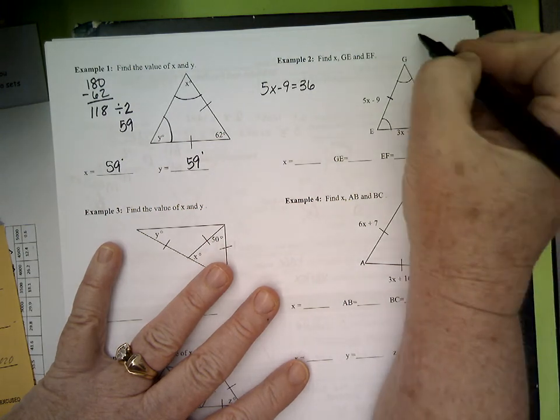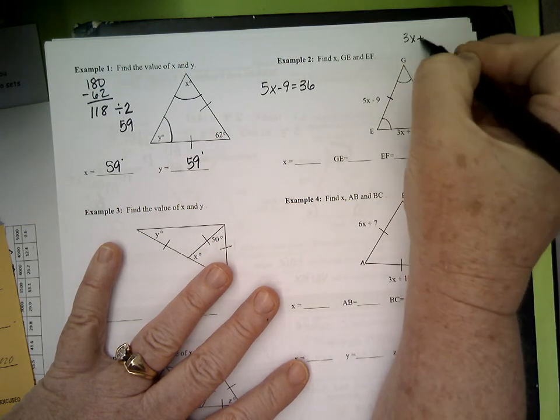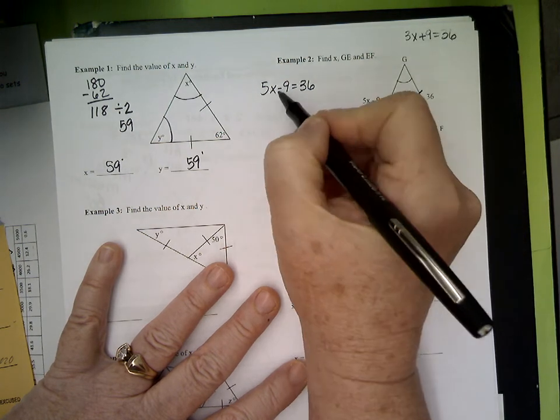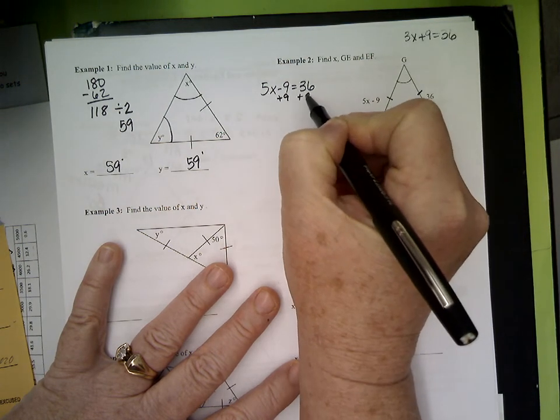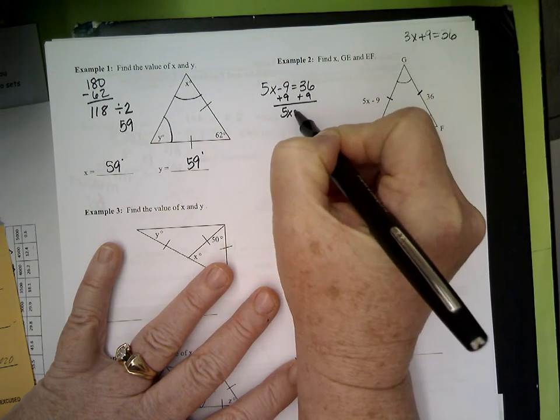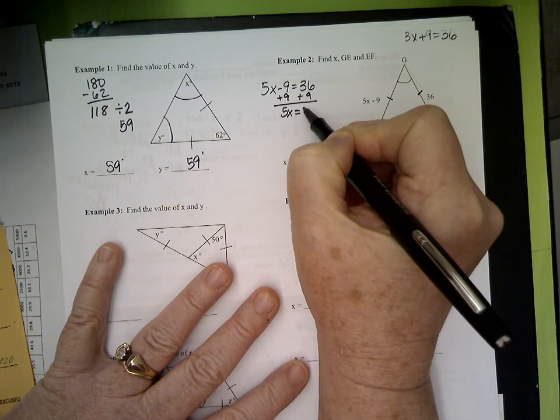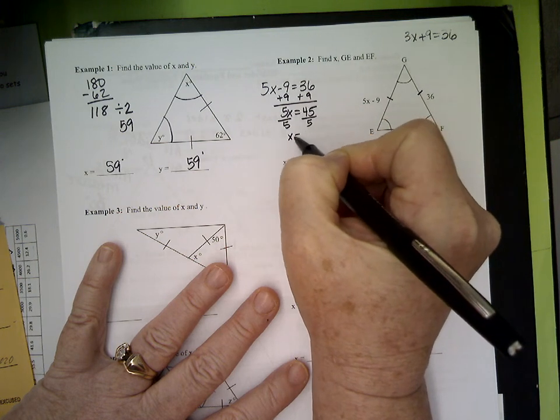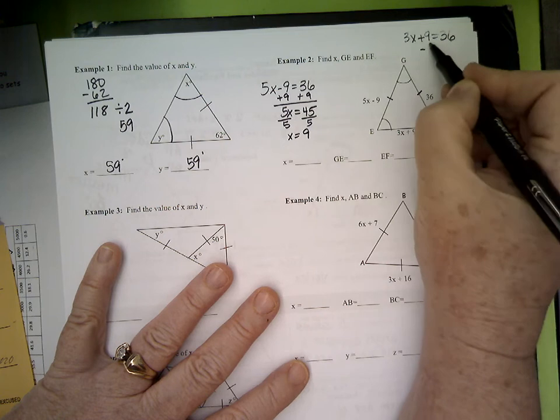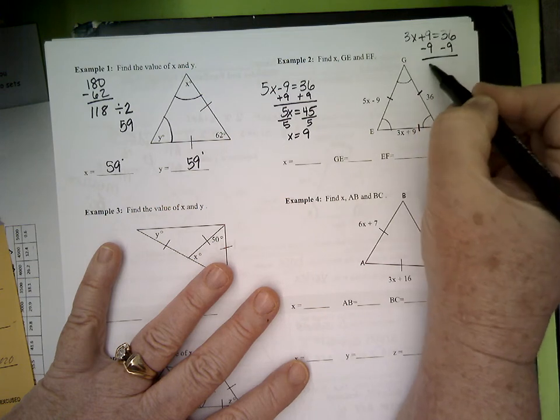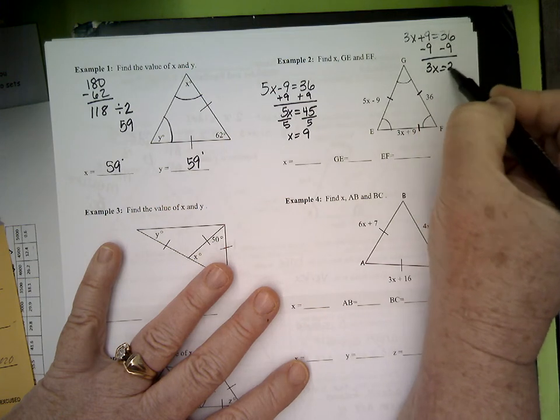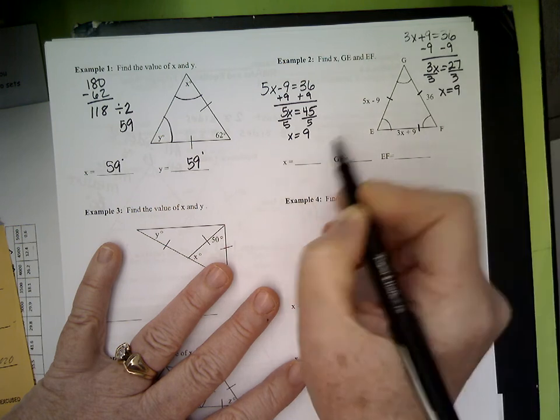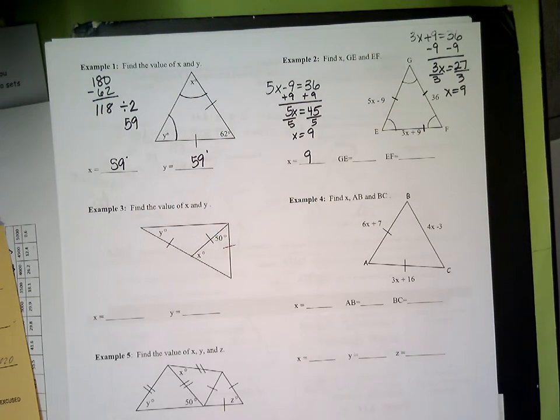I can say 5x minus 9 equals 36, or I could have said 3x plus 9 is 36. I could have started with either one of those. 5x is, what is that y'all, 45? Divide by 5, what is x? 9. If I had solved this one, 3x is 27, divide by 3, x is 9. So did it matter which one I used? No.